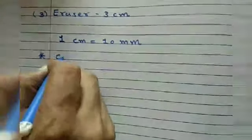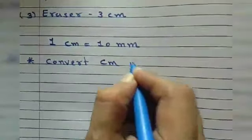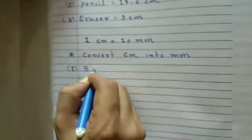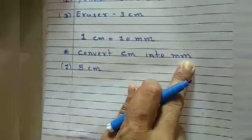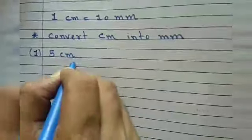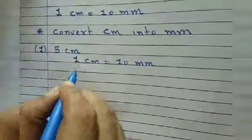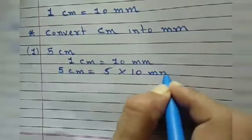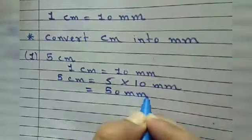Our new topic is converting centimeters into millimeters. Since 1 centimeter equals 10 millimeters, let's take the example of 5 centimeters. So 5 centimeters equals 5 multiplied by 10 millimeters, which equals 50 millimeters.